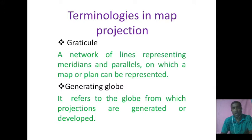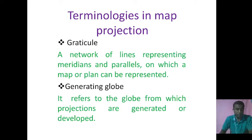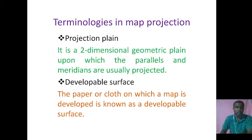Now I am talking about Generating Globes. It refers to the globe from which projections are generated or developed. Normally, it is a small skeleton globe made of glass or wire. The parallels and meridians are shown by black lines or wires placed at their true angular distances apart. The generating globe is a geometrically accurate earth reduced in size.